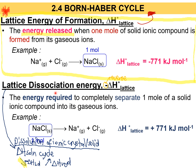In the Born-Haber Cycle, the enthalpy of formation is at the top. Going downward involves atomization, ionization energy, and electron affinity. At the very bottom is the lattice energy, which then goes back up. So when lattice energy goes upward in the Born-Haber Cycle, it represents the lattice energy of formation. Therefore, in the Born-Haber Cycle, we use the lattice energy of formation.